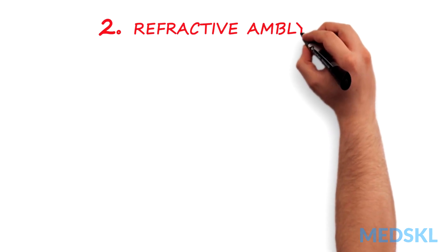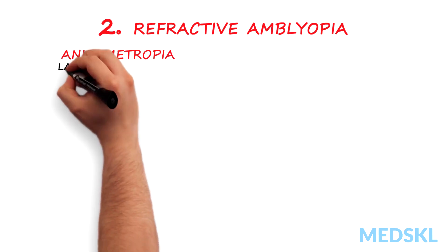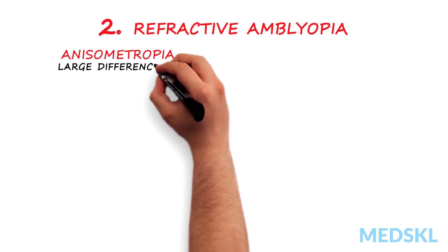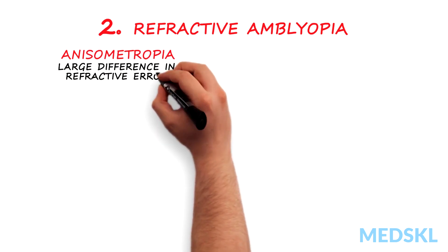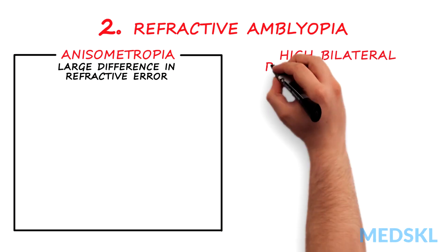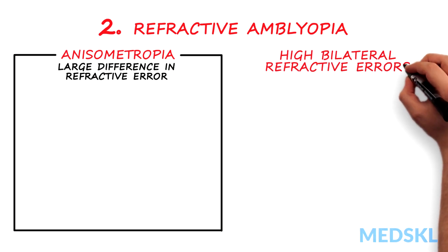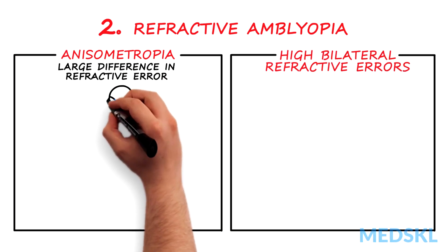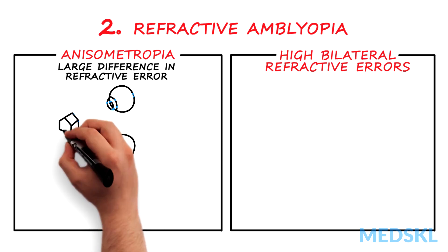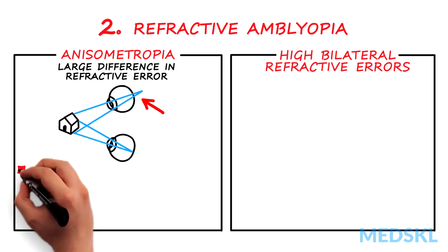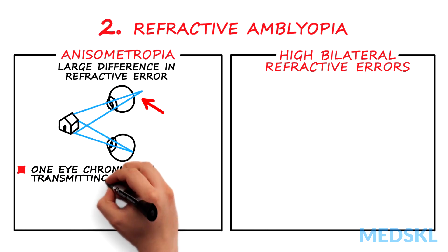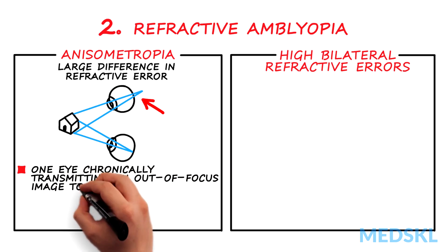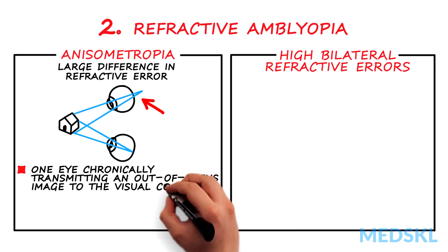2. Refractive amblyopia. This cause of amblyopia can be subdivided into anisometropia — a large difference in refractive error between eyes — and high bilateral refractive errors. Anisometropia is diagnosed when each eye has a different refractive power, which can result in one eye chronically transmitting an out-of-focus image to the visual cortex relative to the other eye.